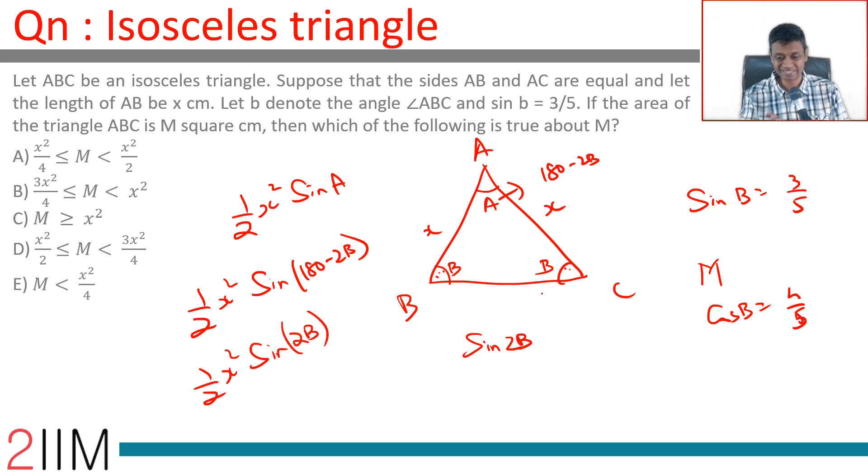If we find this, we are through. We need to find a range for that. And so we know that sin B is 3 by 5, so we can find sin 2B. Cos B is 4 by 5. Sin B is 3 by 5. Cos B is 4 by 5.